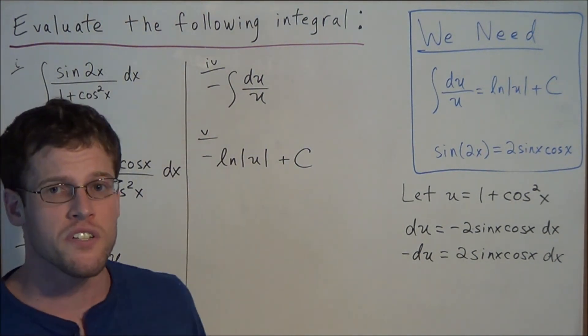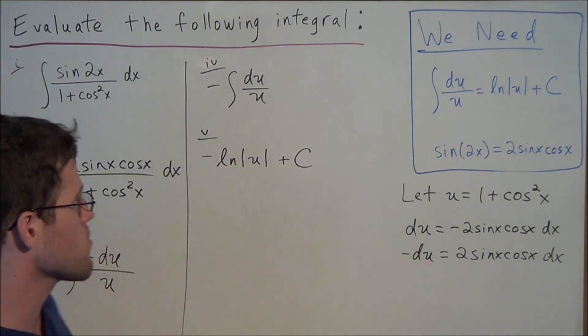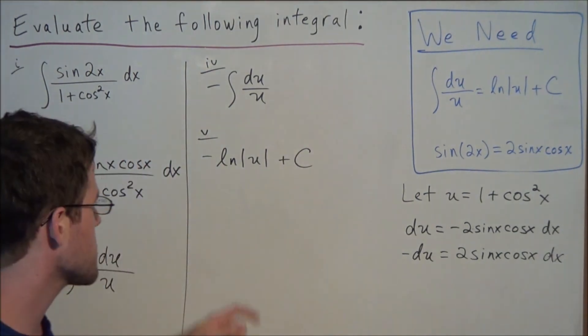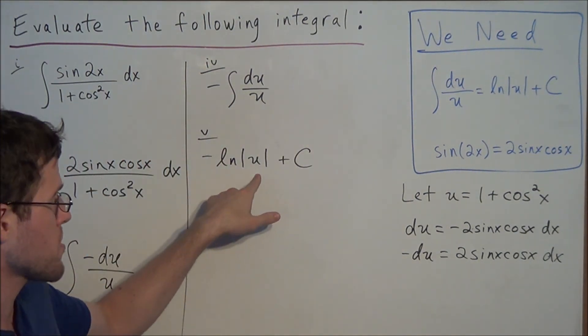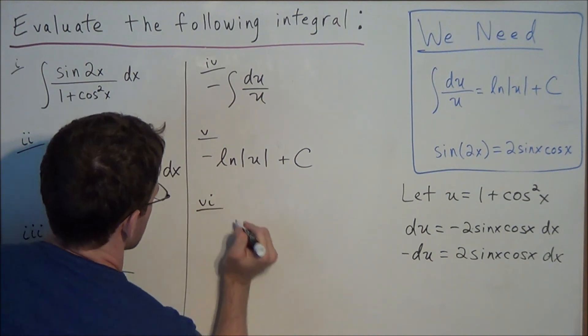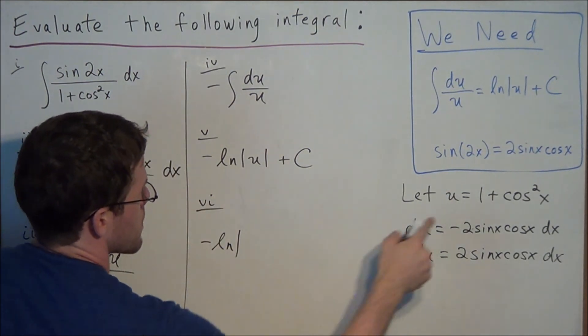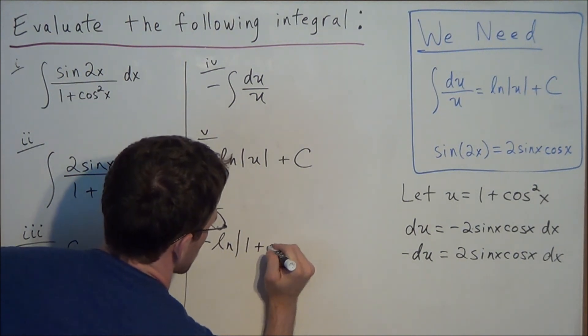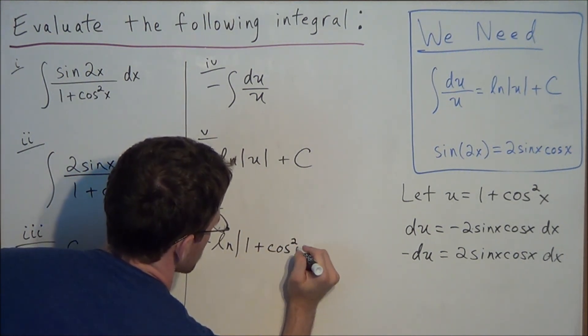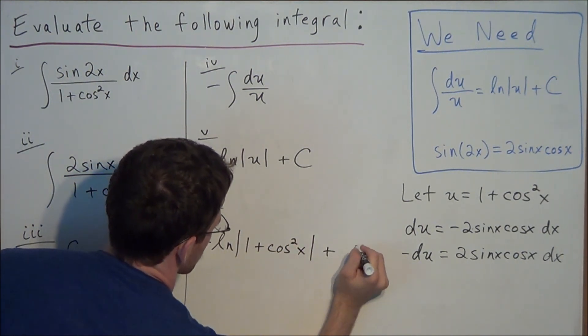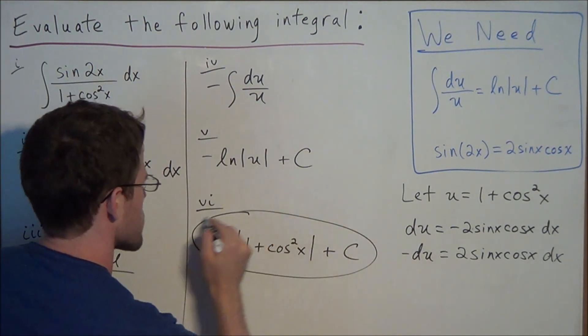So the last thing that we do need to do, remember our original problem was in terms of x, so we need to substitute for our expression u. So our last line, step 6, we have negative natural log of 1 plus cosine squared x plus our constant term c. And this is our final answer.